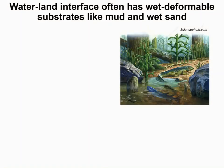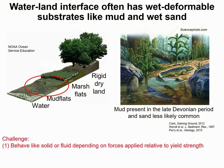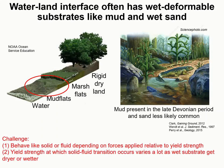But the water-to-land interface often has wet deformable substrates such as mud and wet sand. Moving on wet deformable substrates can be a challenge since they can either behave like a solid or flow like a fluid depending on the forces applied relative to the yield stress. This yield stress at which the solid-fluid transition occurs varies a lot as the wet substrate gets drier or wetter.